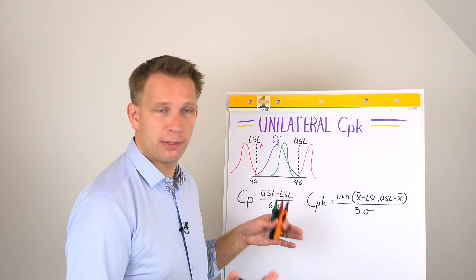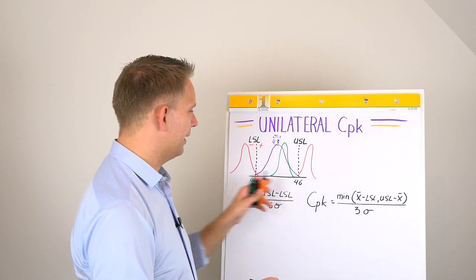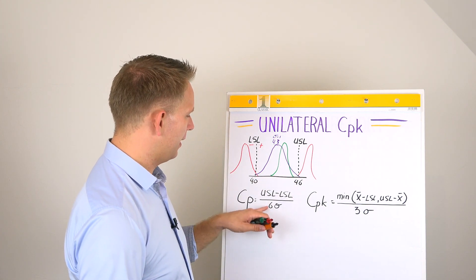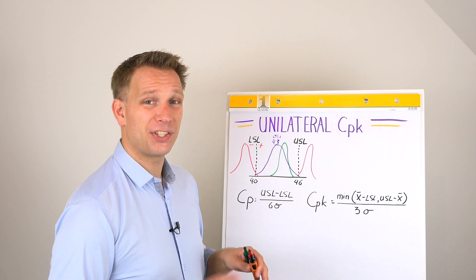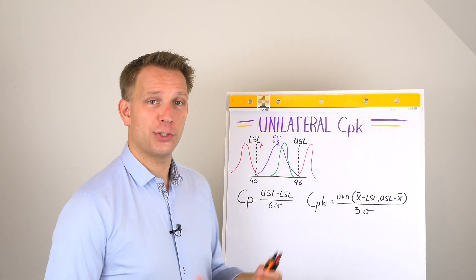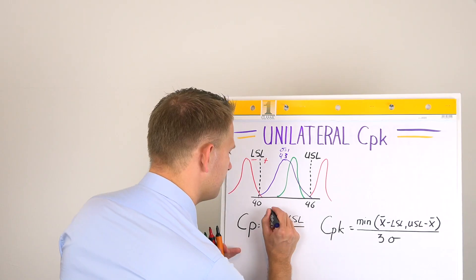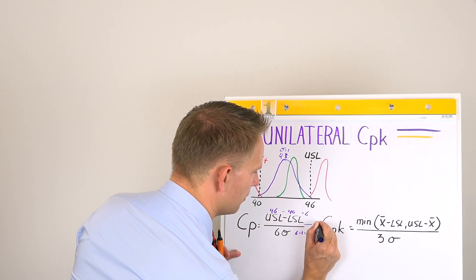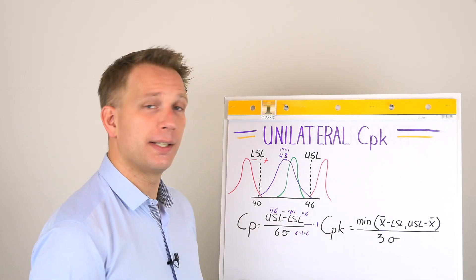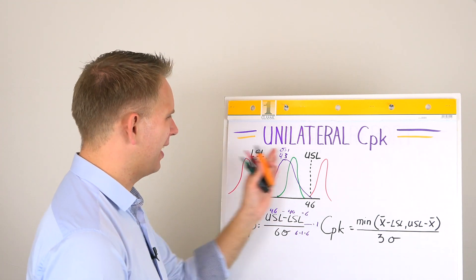With a standard deviation of 1: our limits are 46 minus 40, which is 6 (upper minus lower spec limit). We divide by 6 times the standard deviation of our product, which is 1, so 6 times 1 is also 6. This gives us 6 divided by 6, which equals 1.